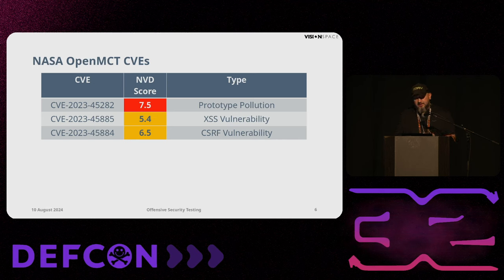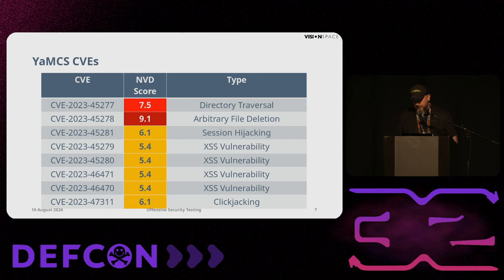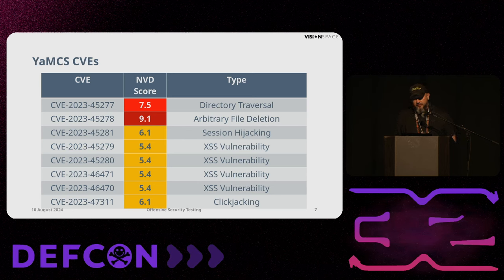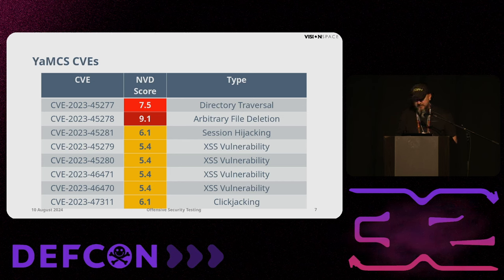On NASA Open MCT, we found a couple of vulnerabilities such as prototype pollution, XSS, and CSRF. On the AMCS, which is another Mission Control System and one of the more established ones, we found a few more vulnerabilities such as directory traversal, arbitrary deletion, session hijacking, and a few XSS vulnerabilities.